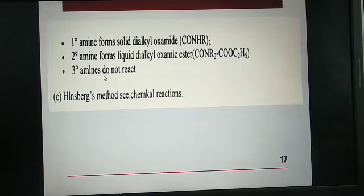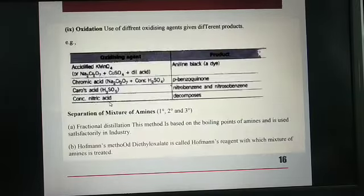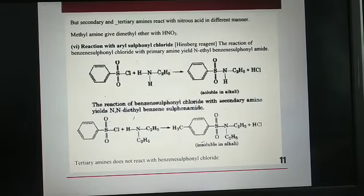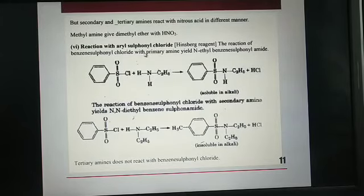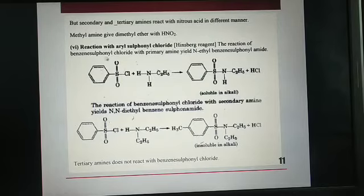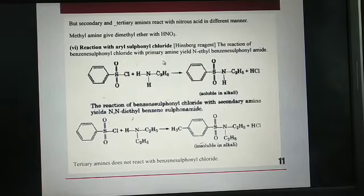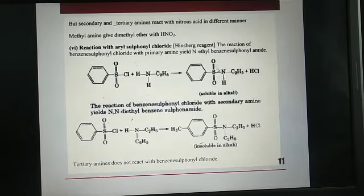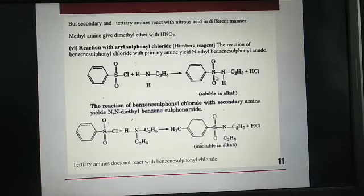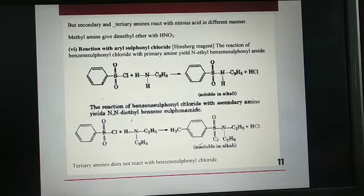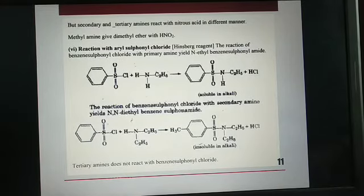And third method: Hinsberg test. We have already done Hinsberg. This is Hinsberg test, aryl sulfonyl chloride. Reaction with aryl sulfonyl chloride. So 1 degree amine gives soluble N-ethyl benzyl sulfonyl amide. 2 degree gives insoluble N,N-diethyl benzene sulfonyl amide. But 3 degree does not react.